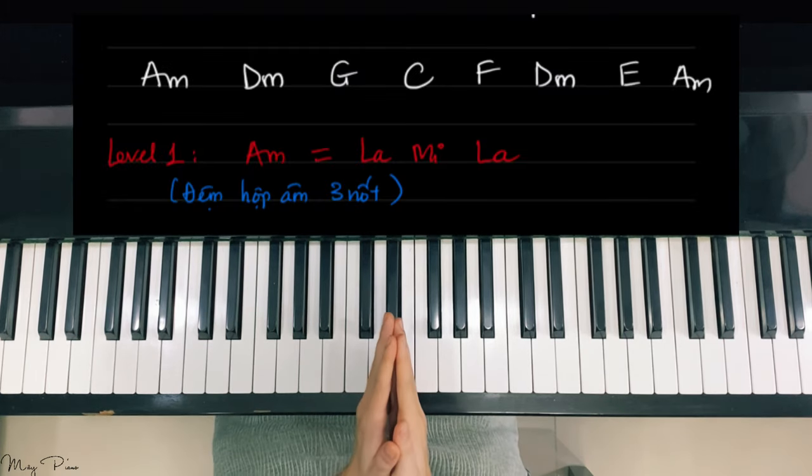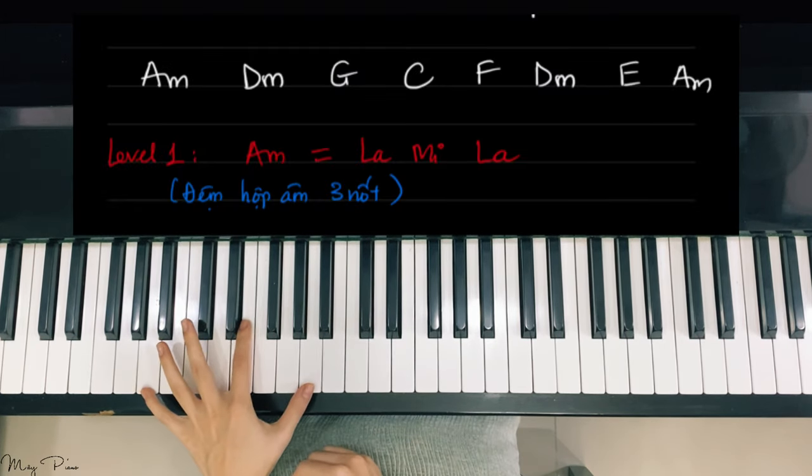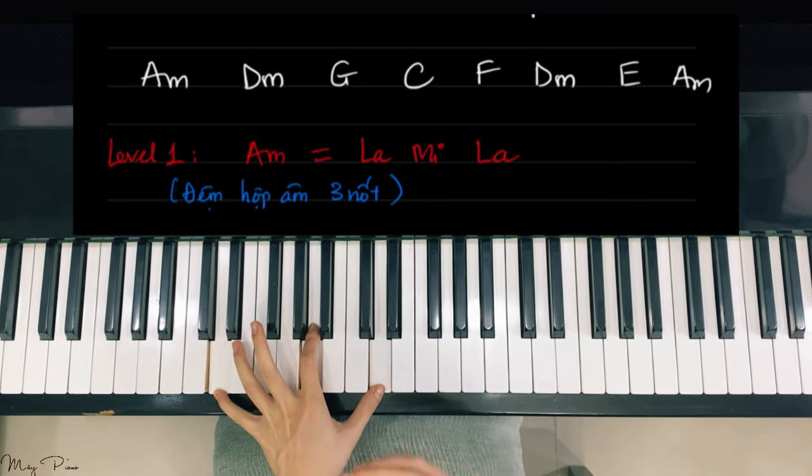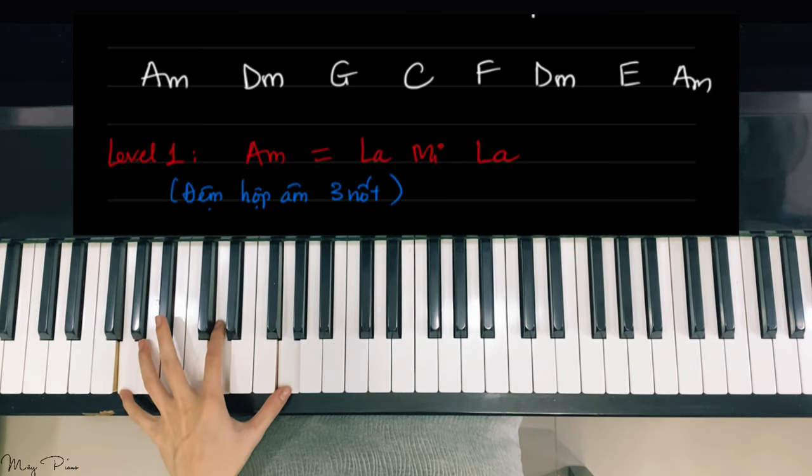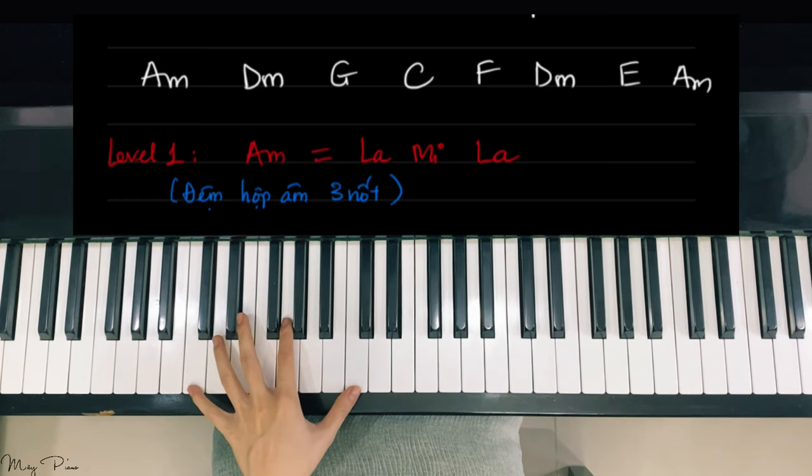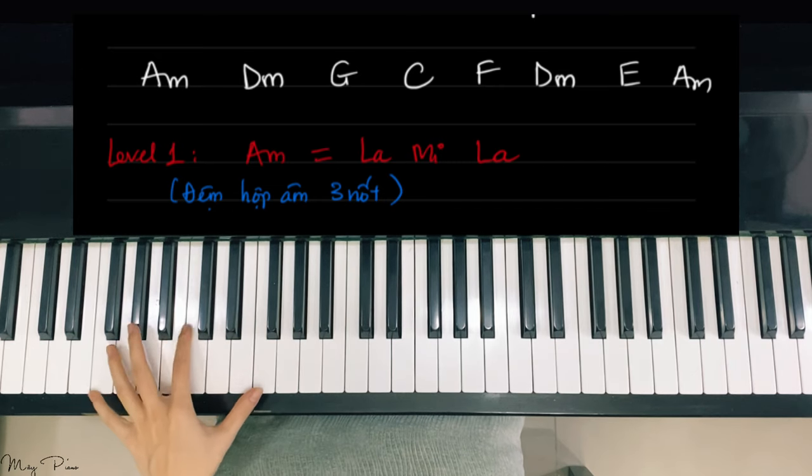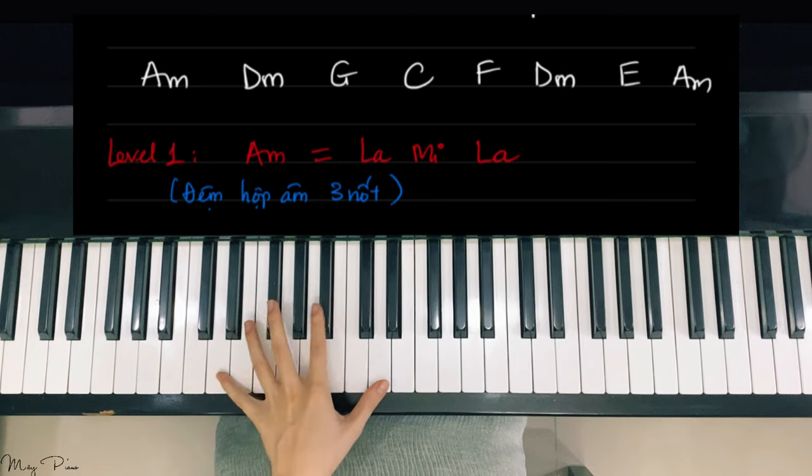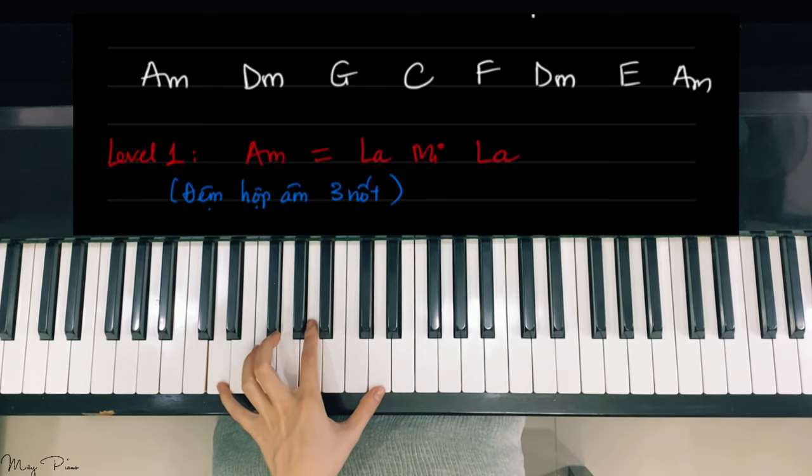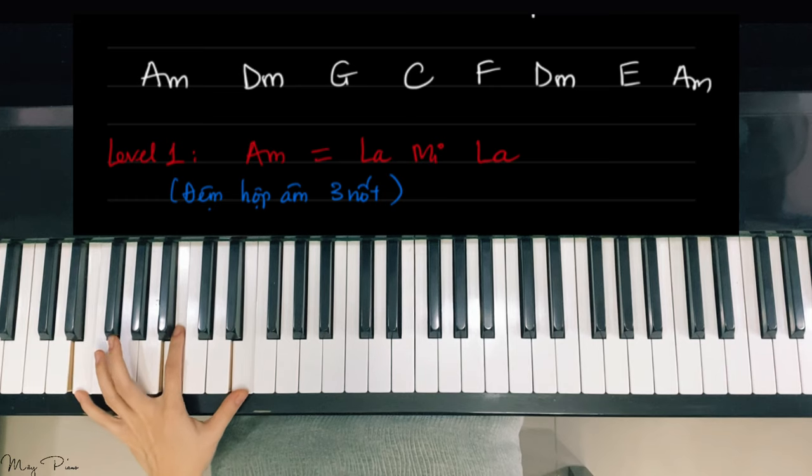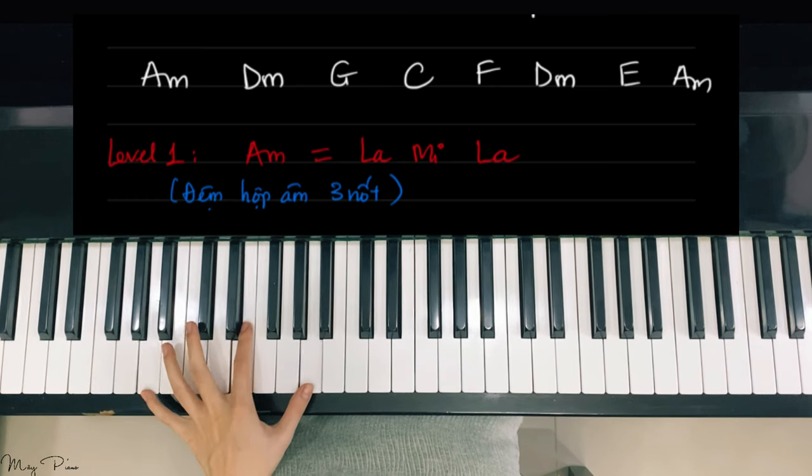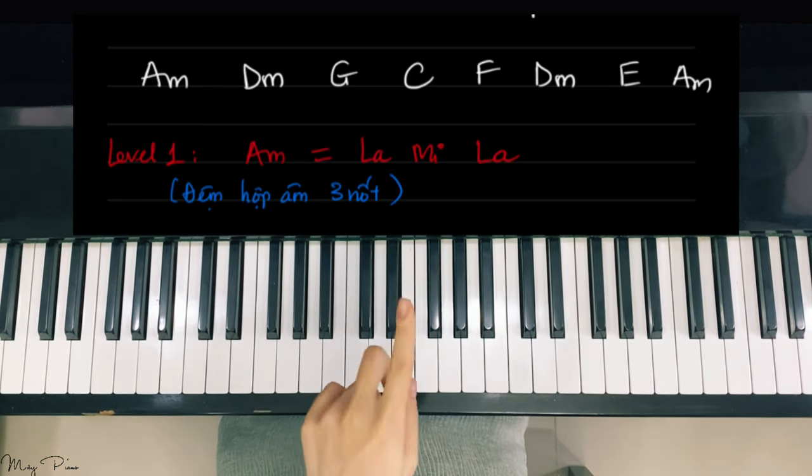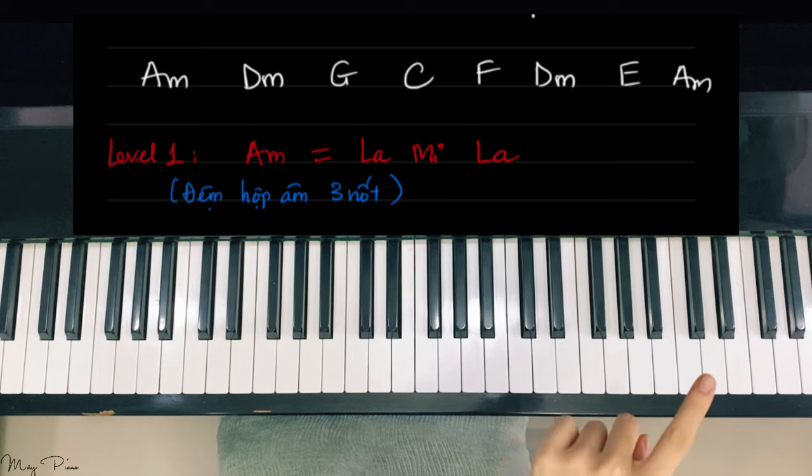Now the left hand will have the following chords: A minor, A-mi-la, D minor re-la-re, G major do-fa-son, C major do-son-do, F major fa-son-do-fa, D minor re, E minor mi-si-mi. And finally A minor. So we will have the chord progression: la, re, son, do, fa, re, mi, la.